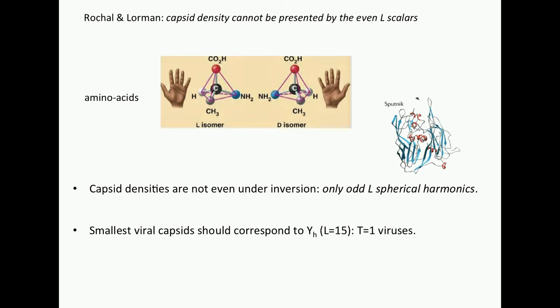So they concluded, since capsid densities are definitely not invariant under inversion, you should only use the odd spherical harmonics. And since you're only allowed to use the odd spherical harmonics, the smallest capsid should correspond to the smallest odd icosahedral spherical harmonics, and that is L equals 15. And there we have the T equals one viruses. By the power of pure reason, they guess the density of small viruses. It's beautiful, right? Beautiful idea.